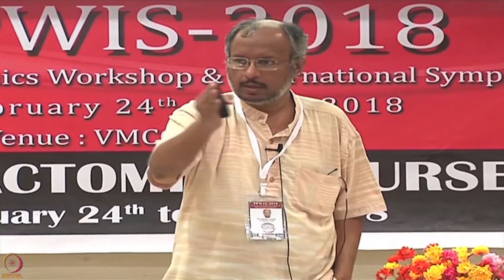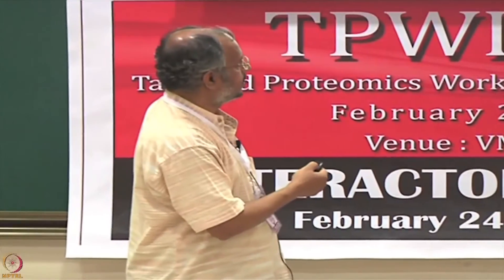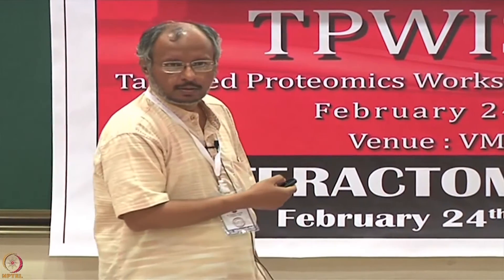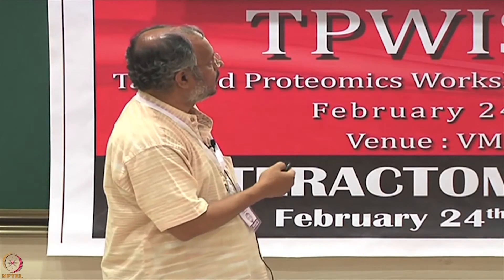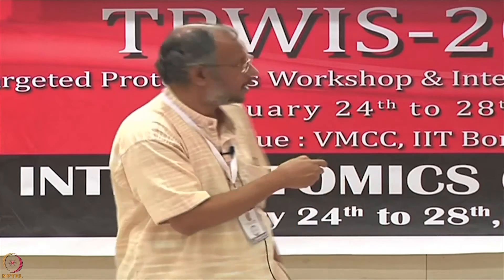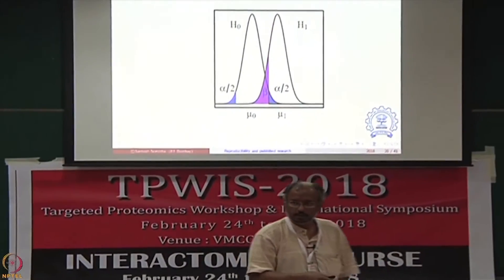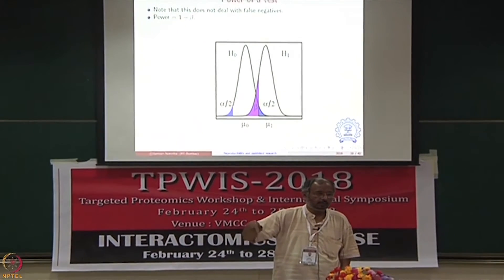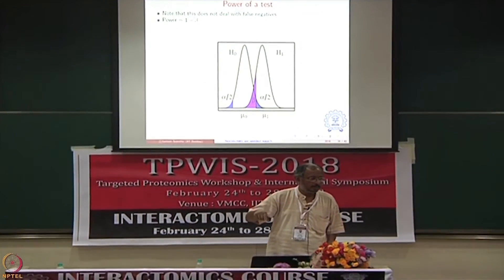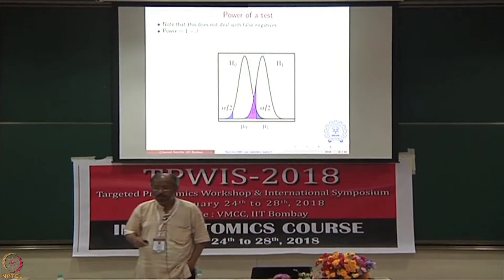If you were to create a diagnostic kit and change the threshold for detection of a particular measurement to cut down false positives, think about what happens. If I take this threshold and move it to the right under the H-naught curve, the blue area goes down and I commit less of a mistake with respect to my original hypothesis. But if I move this coordinate to the right, the purple area grows. If you are trying to minimize false positives in your analysis, you run the risk of increasing false negatives and vice versa — that is the key issue.